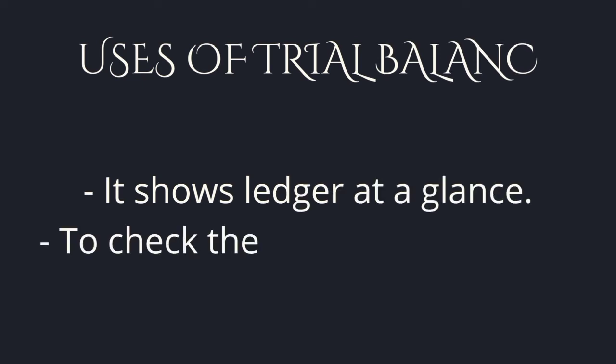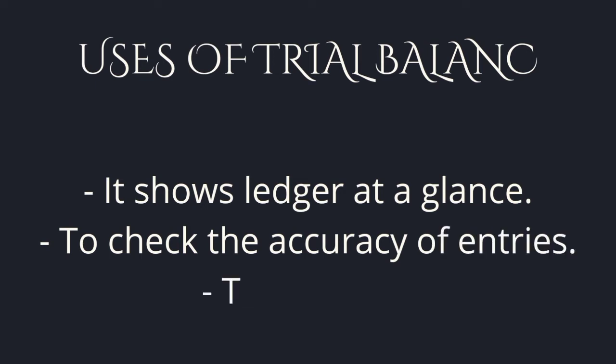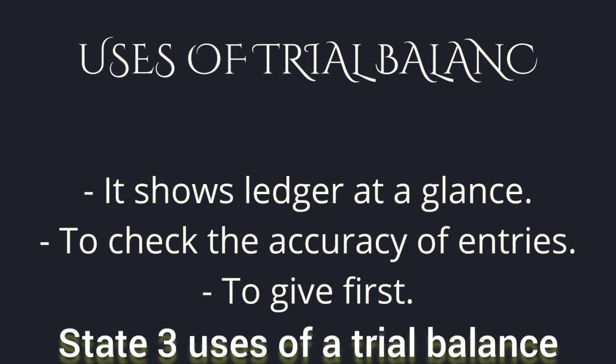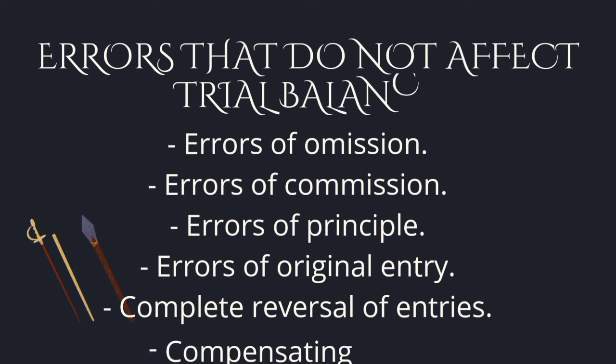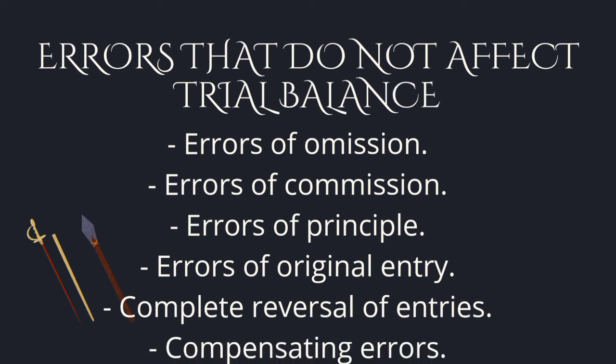Trial balance can be used in the following ways. Why do we use trial balance? Number one, it shows ledger items at a glance. Secondly, it will help check the accuracy of entries made in the ledger. It also gives first-hand information to the bookkeeper about errors committed. That leads us to errors that do not affect trial balance: first, a transaction completely omitted from the book; second, a transaction posted to a wrong account; third, double entry observed but made wrong entry.